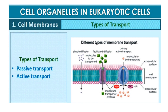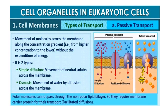On the basis of transportation, cell membrane transport is of two types: passive transport and active transport. In passive transport, many molecules can move across the membrane without any requirement of energy. Neutral solutes may move across by simple diffusion along the concentration gradient, from higher to lower concentration. Water may also move across the membrane from higher to lower concentration by diffusion, called osmosis. Polar molecules, which cannot pass through the non-polar lipid bilayer, require a carrier protein to facilitate their transport, known as facilitated diffusion.